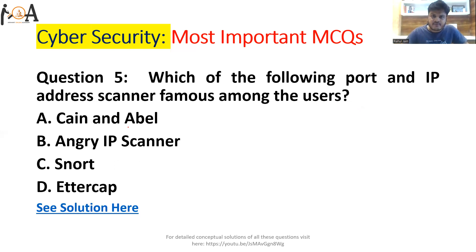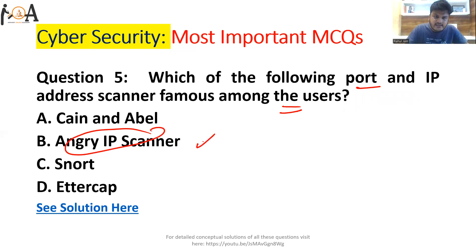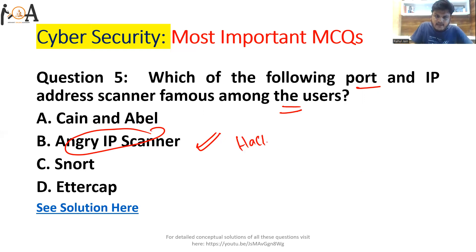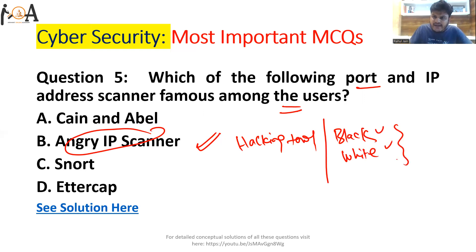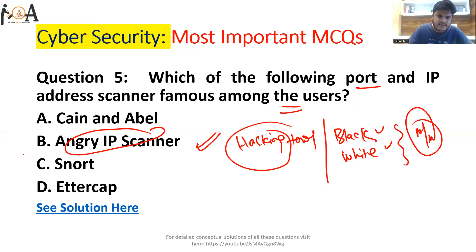Question number five: which of the following port and IP address scanner is famous among users? The correct answer is Option B — Angry IP Scanner. It is a very important IP address scanner and a hacking tool used by both black hat hackers and white hat hackers to find weaknesses in a network or network server.